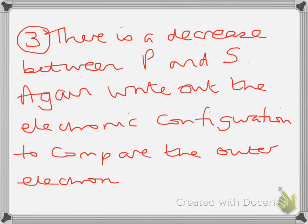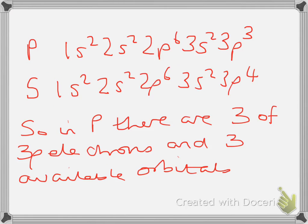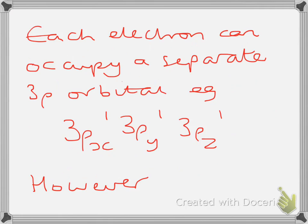The third thing you need to have a look at is there is a decrease between phosphorus and sulphur. Again if we write out the electronic configuration to compare them. So for phosphorus it's 1s2, 2s2, 2p6, 3s2, 3p3 and sulphur it's 1s2, 2s2, 2p6, 3s2, 3p4. So in phosphorus there are 3 electrons of 3p and there are 3 available orbitals. This means that each electron can occupy a separate 3p orbital. So for example 3px1, 3py1, 3pz1.